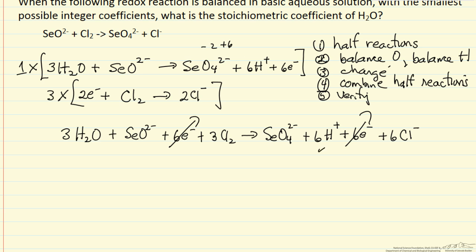Left side one selenium, right side one selenium. On the left I have three oxygens plus one, four oxygens, right side four oxygen atoms. Then the left six chlorine atoms and the right six chlorine atoms. And then the final check is the charge minus two on the left and minus two on the right since the six plus six and the minus six cancel. So the equation checks.